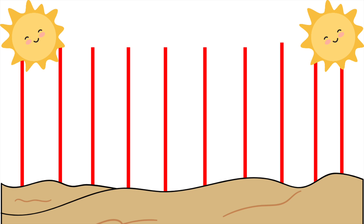You will need 10 observers. At the first stick, wait for 12 noon, because at that time the stick will have no shadow. This is the starting point, and you can start your stopwatch.